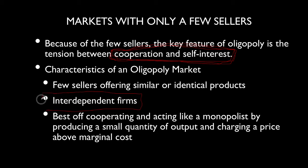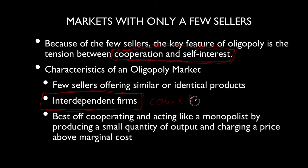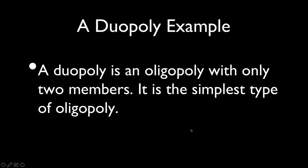What interdependence means is that the actions of one firm affect the profits of the other firm. A favorite example of this is Coke and Pepsi. If Coke were to slash prices, that's going to affect Pepsi's bottom line. In an oligopoly, the firms are best off cooperating, trying to act like a monopolist. However, there's always going to be an incentive for them to not cooperate.